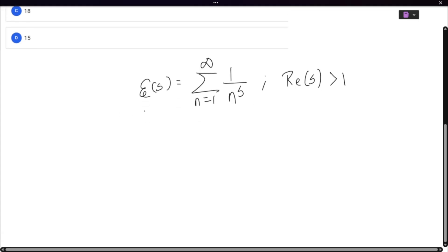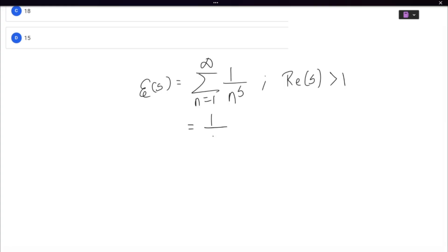Now, so what do we have here? If we expand this, we will always have 1 by 1 to the power s plus 1 by 2 to the power s and so on. This is called the Riemann zeta function.